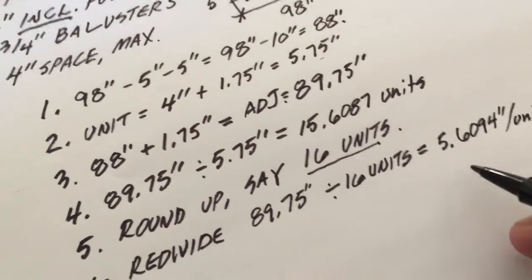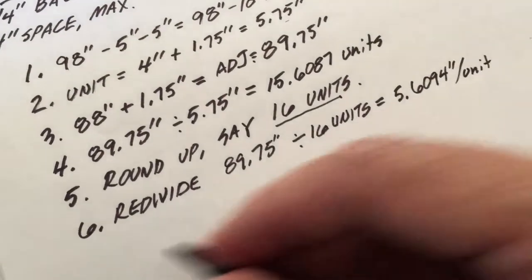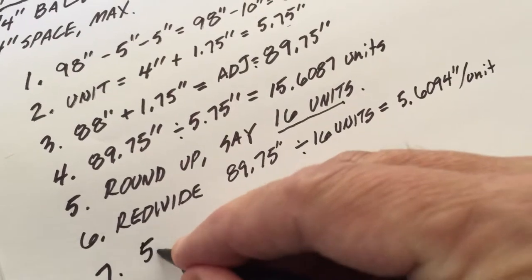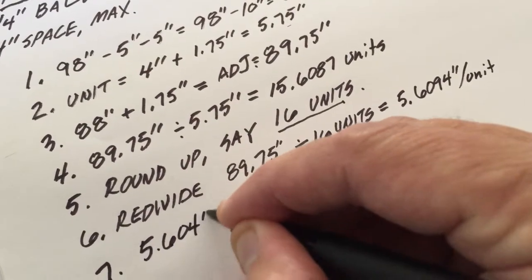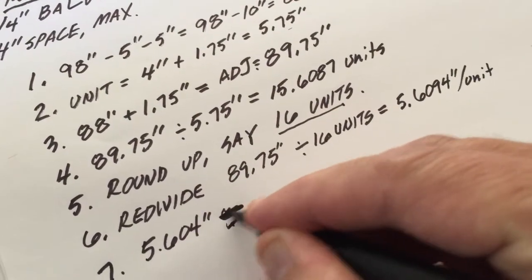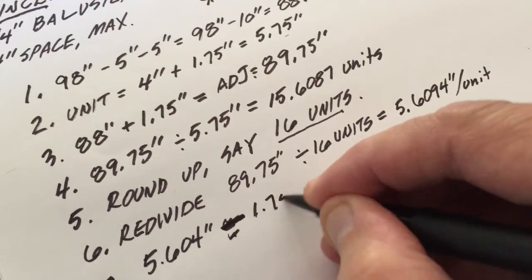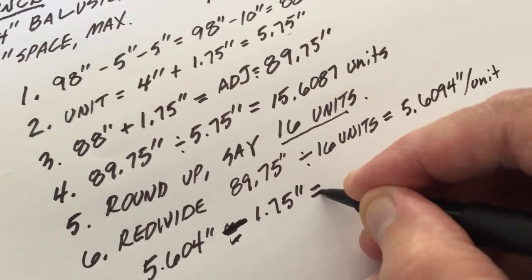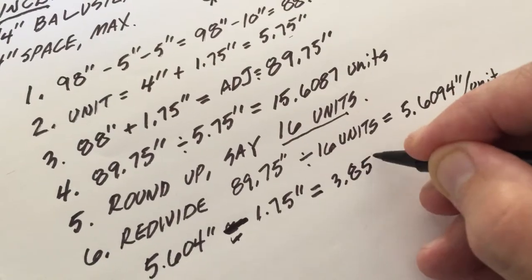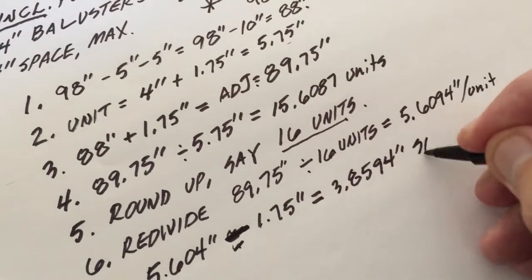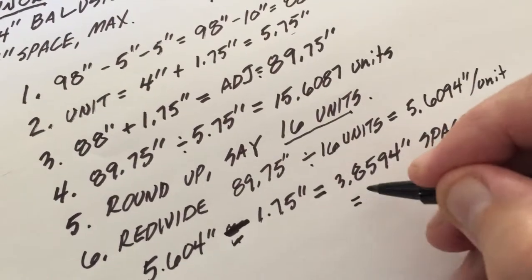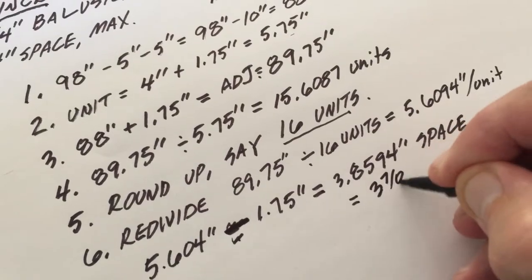Now I simply need to subtract out the baluster width and find the space. I take that 5.6094 inches minus 1.75 inches equals a 3.8594 inch space, which is equal to about three and seven eighths inch space.